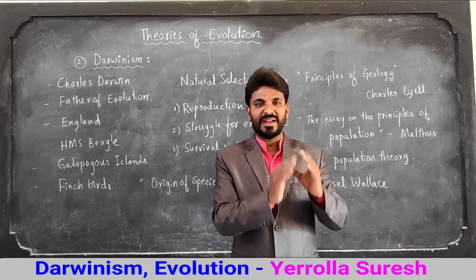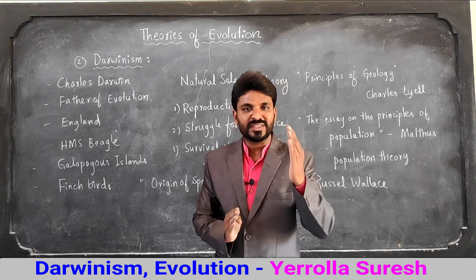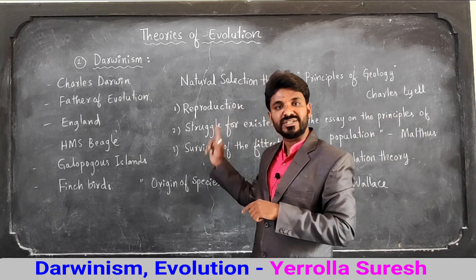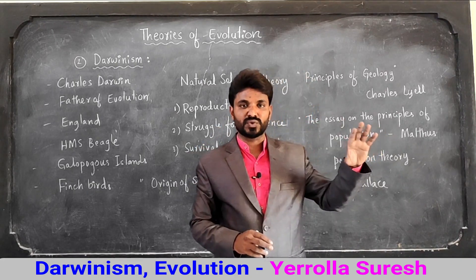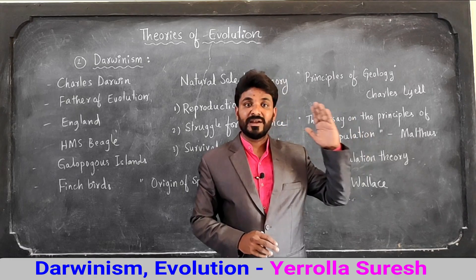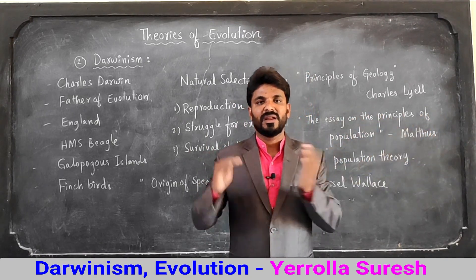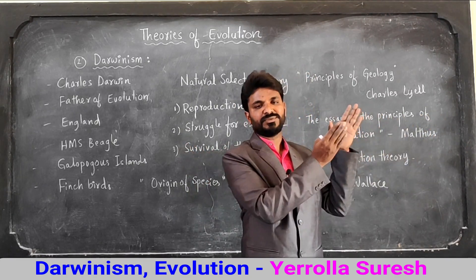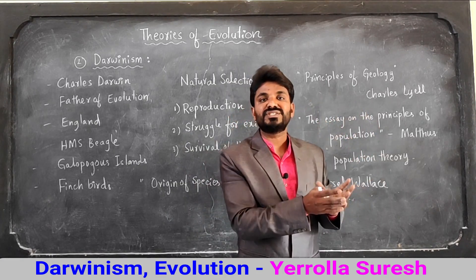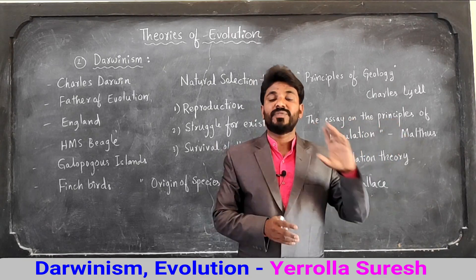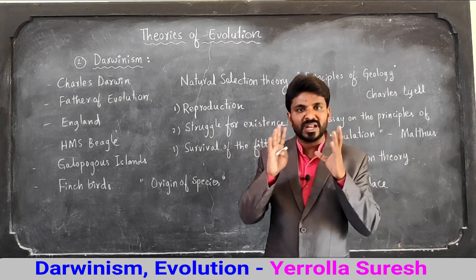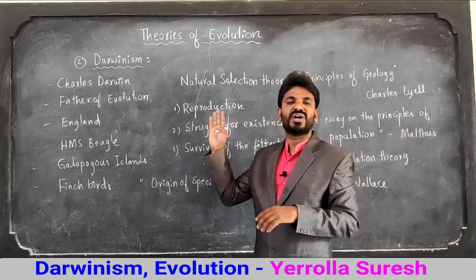Stronger organisms survive and pass on their characters to the next generation. In the next generation, the same situation is repeated — stronger organisms survive and weaker organisms get eliminated, and those stronger organisms again pass on their characters. After so many generations, these smaller changes lead to very larger changes in organisms — that is macro evolution — leading to the formation of new organisms or new species. This is evolution according to Charles Darwin.